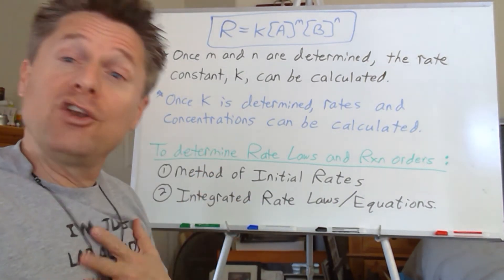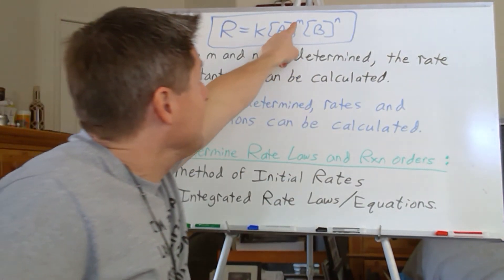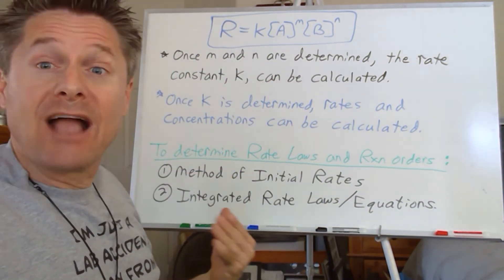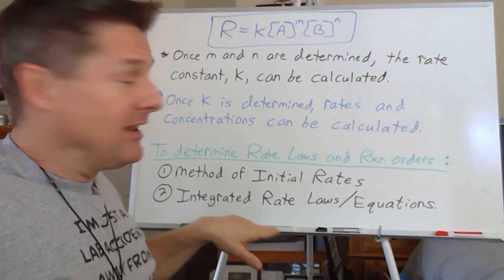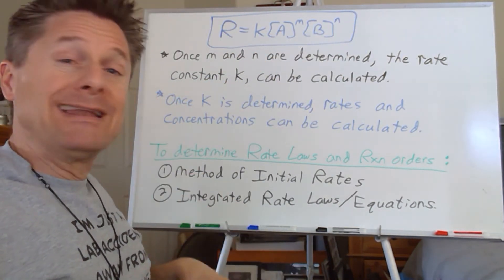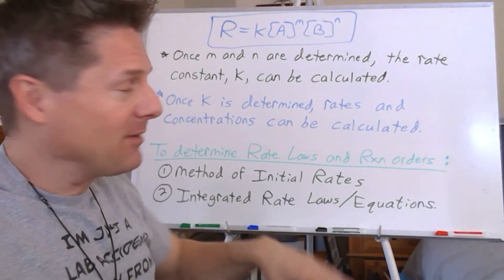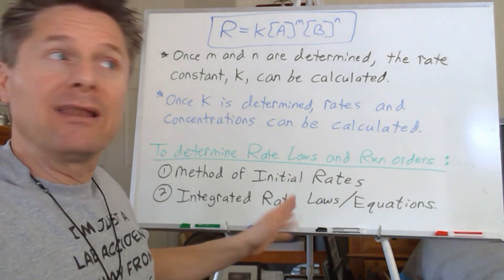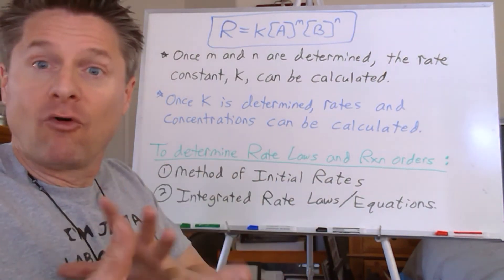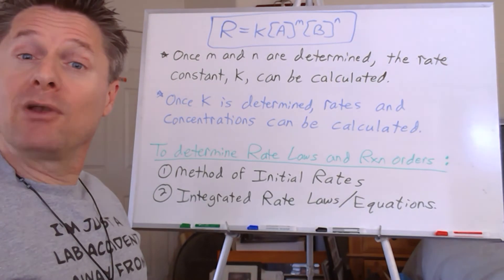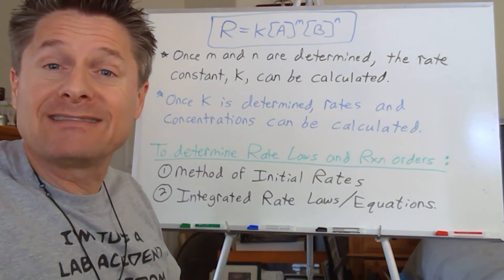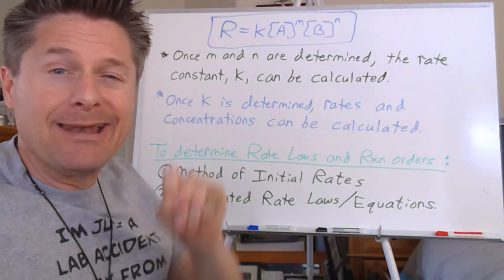Once you have the rate law and the rate constant, you're set. You can calculate the reaction rate at any point, or solve for a missing concentration — it's just math. What we're interested in now is how to determine m and n experimentally. Next we'll cover the method of initial rates to get m and n, then move into integrated rate laws for zero, first, and second order reactions.